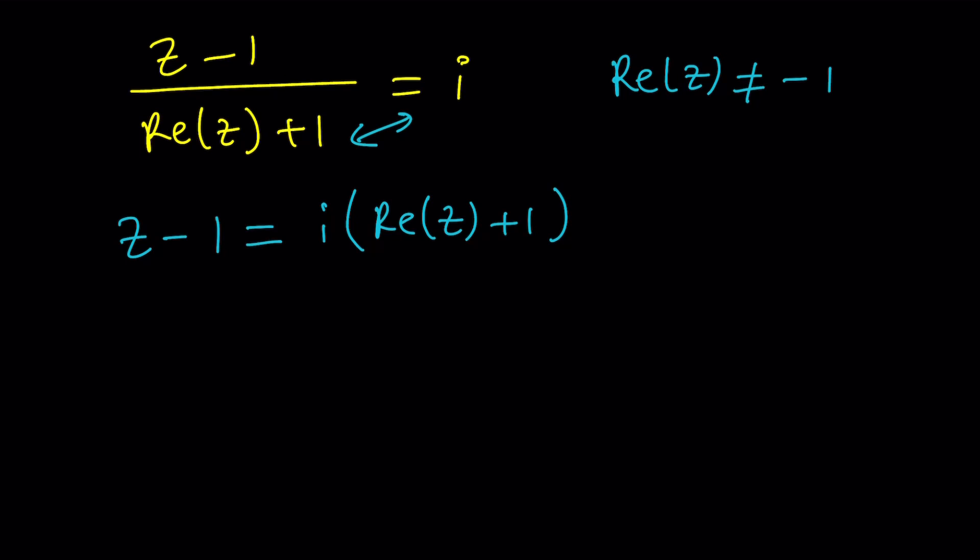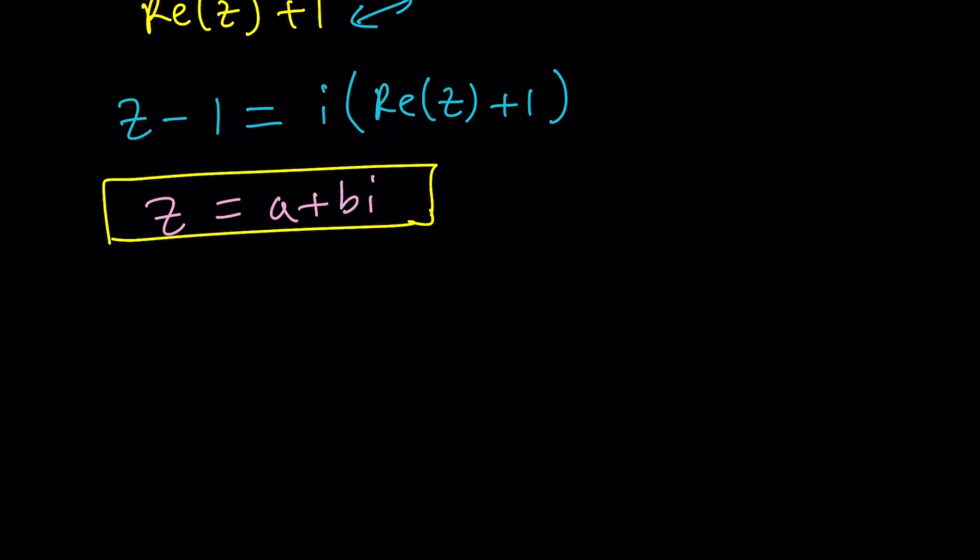Now we're going to replace Z with A plus B I because that's the name of this channel. Not just because it's the name of the channel, but it's helpful. That's why it's the name of this channel. So let's go ahead and do the replacements. And what is the real part of Z then? The real part of Z is just going to be A because notice that Z is made up of the real part and the imaginary part. The real part of Z is a real number, by the way. A and B are real numbers. The definition of complex numbers dictates that A and B are real.